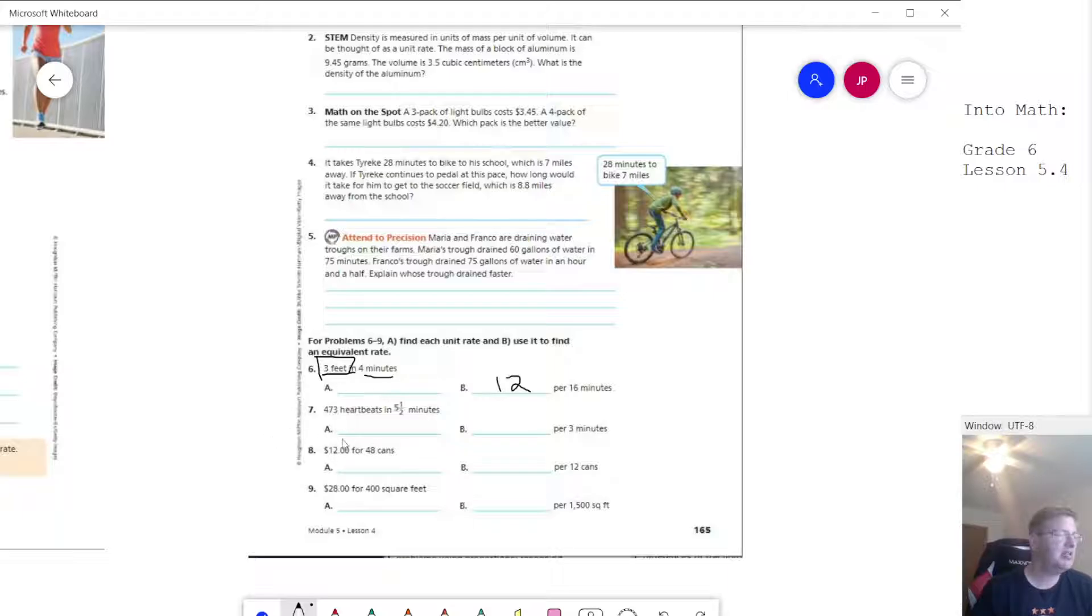For this one, we would be dividing 473 divided by five and a half. And we would actually need to do this part first to find the unit rate and then multiply that answer times three to get the answer for this one. So those are a couple examples from the homework tonight that I wanted to take a quick look at.